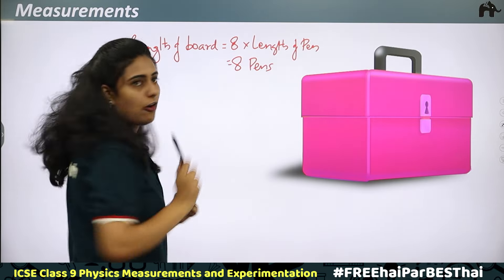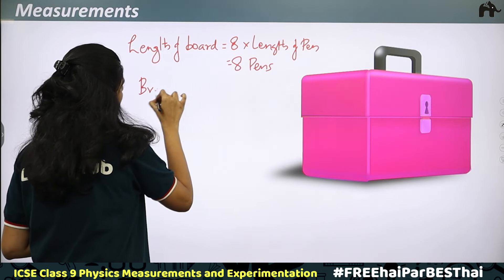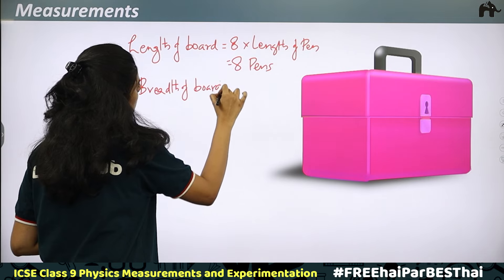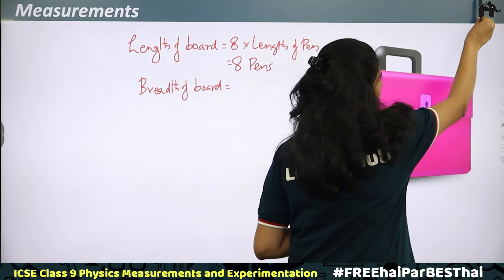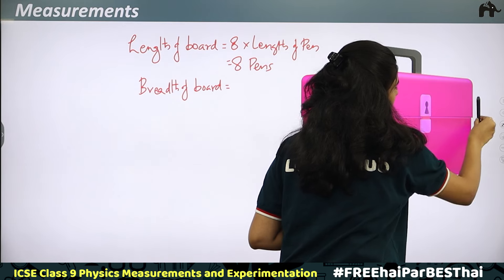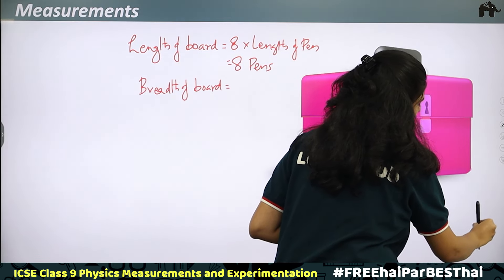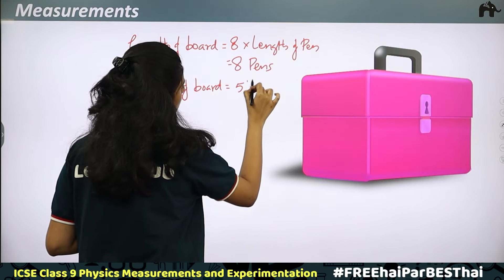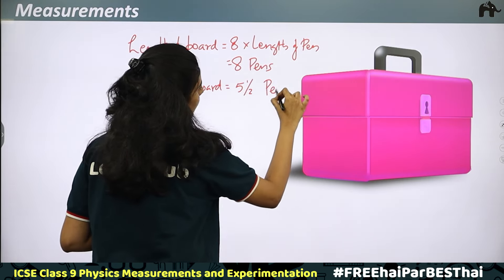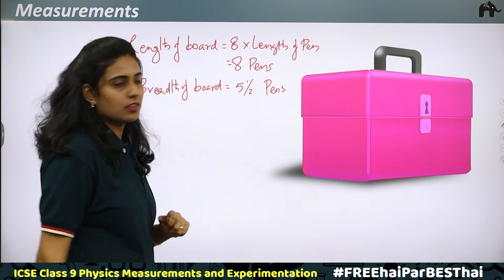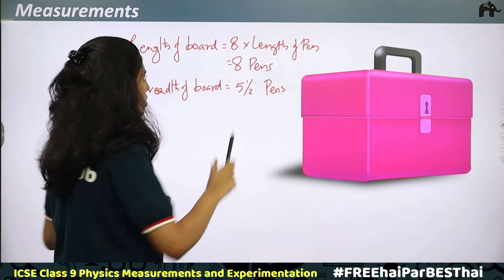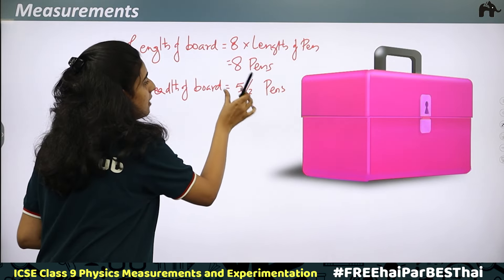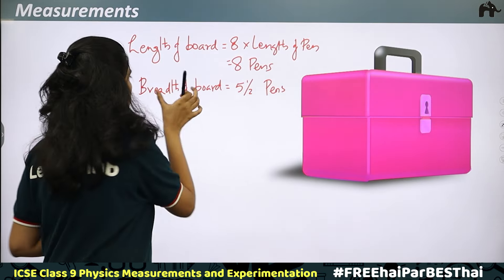Now let us measure the breadth of the board. Counting: 1, 2, 3, 4, 5, 5 and a half. So the breadth of the board is equal to 5 and a half times the length of a pen. So using this pen, 8 pens equals the length of the board and 5.5 pens equals the breadth of the board.